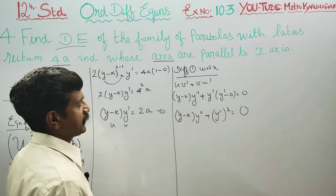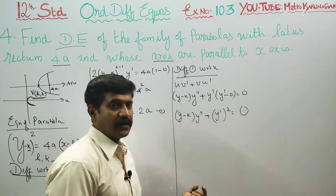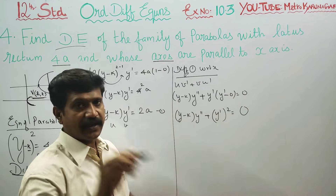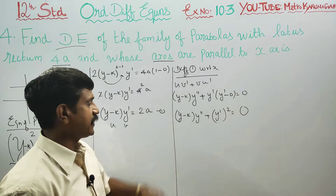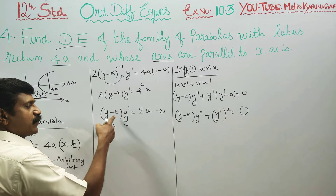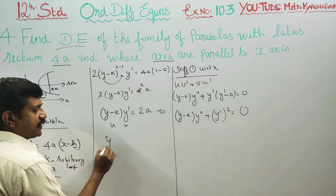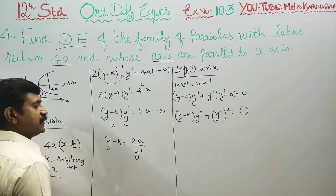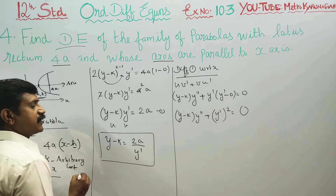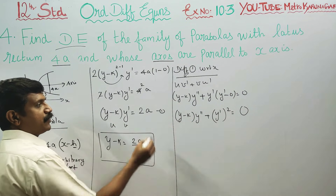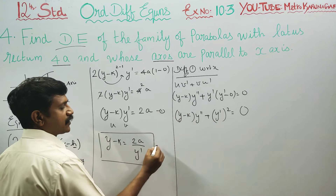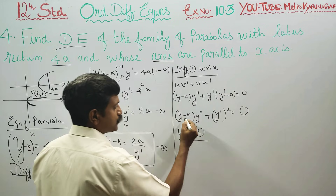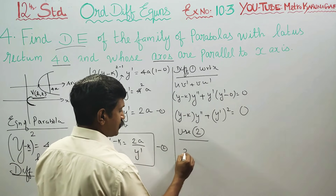The arbitrary constant k must be eliminated. From equation 2, y minus k can be written as 2a divided by y-dash. We use this result — substituting the value of (y minus k) equal to 2a over y-dash into the second differentiation.